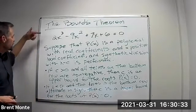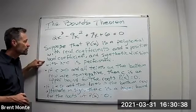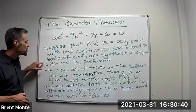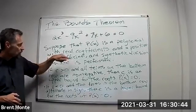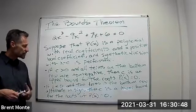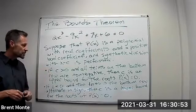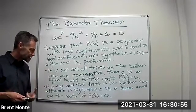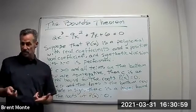So the bounds theorem says suppose P(x) is a polynomial with real coefficients and a positive lead coefficient and synthetic division with x minus c is performed. If c is greater than zero and all terms of the bottom row are non-negative, then c is an upper bound for the roots of P(x) = 0. But if c is less than zero and the terms on the bottom row alternate in sign, then c is a lower bound for the roots of P(x) = 0.